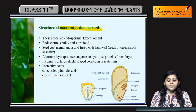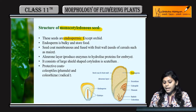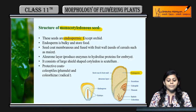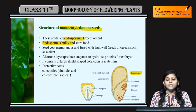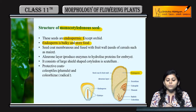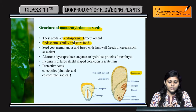Monocotyledonous seeds are endospermic in nature — unmein endosperm present hota hai. Endosperm is bulky and is used to store food. Endosperm food storage karta hai.